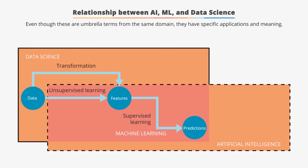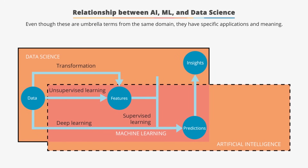Supervised and unsupervised learning are the machine learning techniques used to extract predictions from a given data set. Deep learning is a subfield of machine learning involving algorithms that use artificial neural networks modeled on the structure and performance of neurons in the human brain. Deep learning is most effective when there isn't a clear structure to the data. The next step in the flow diagram is to get insights from predictions using data analysis, which is the process under data science.